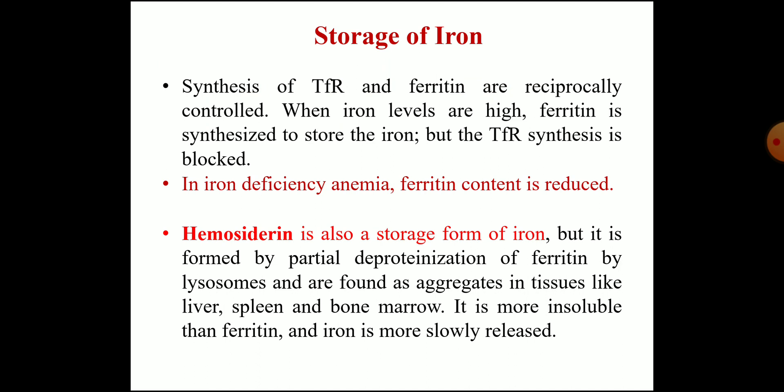The second storage form is hemosiderin, which is formed by the partial deproteinization of ferritin by lysosomes and is found in aggregates in tissues such as liver, spleen, and bone marrow. It is more insoluble than ferritin, and iron is released from it more slowly. When asked about storage forms of iron, write mainly about ferritin and also mention hemosiderin as a partially deproteinized form of ferritin that also serves as a storage form.